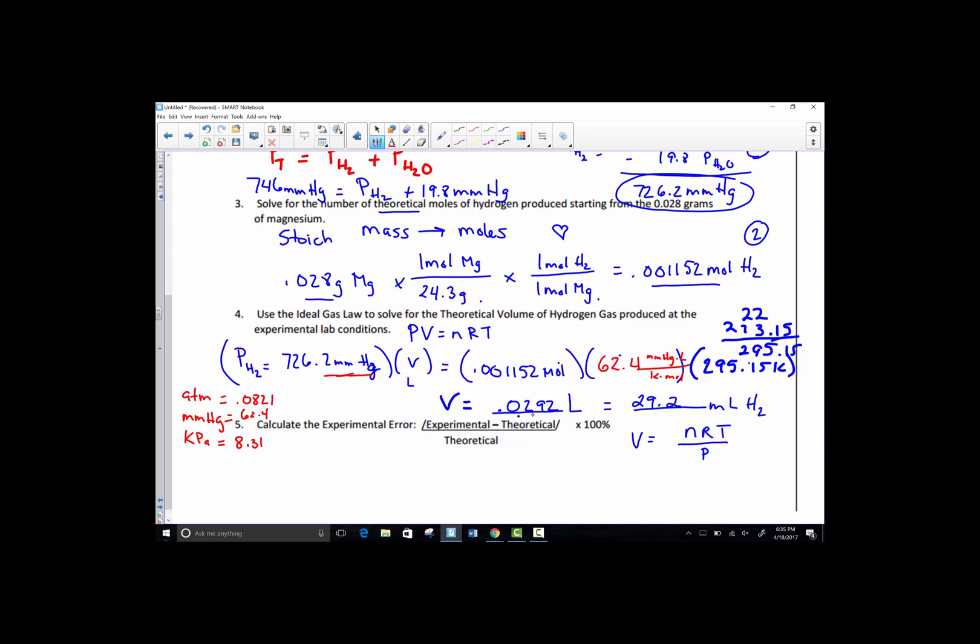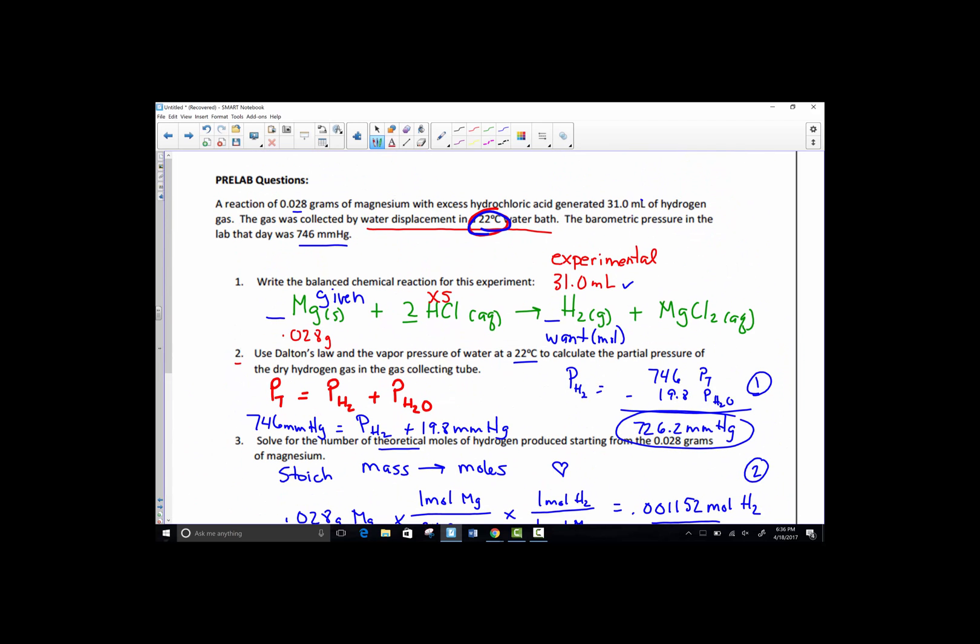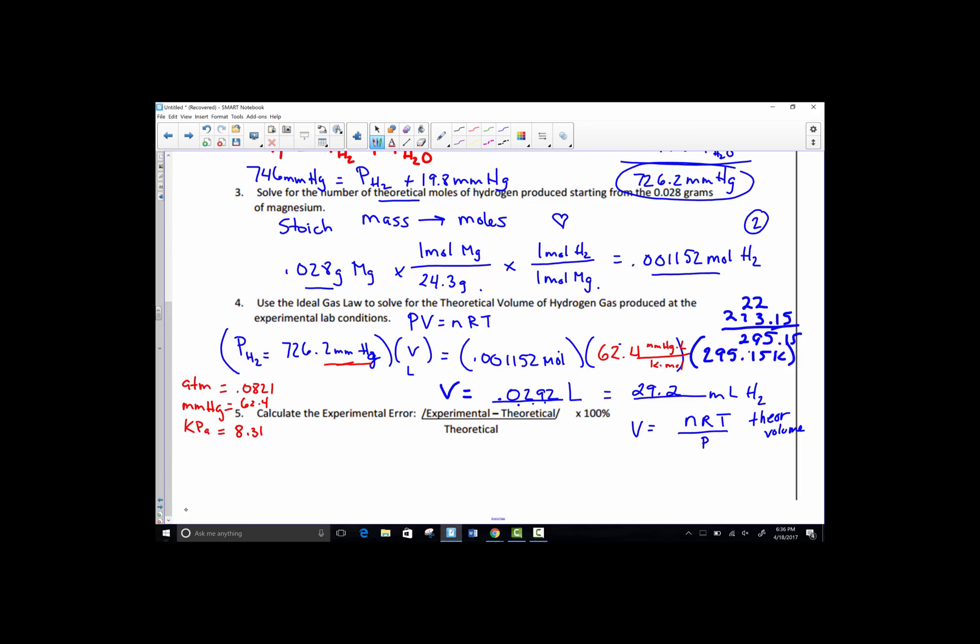We did nRT divided by P and found the volume in a liter. Slid that decimal three spots over to find milliliters. 29.2, that's our theoretical volume. So now let's calculate our percent error. How well did we do? We were told we generated 31 mils. So whatever your eudiometer tube reads, that's your experimental volume. 31 mils was given to us in this example. We calculated that we should have generated 29.2 mils. That's our experimental minus theoretical.